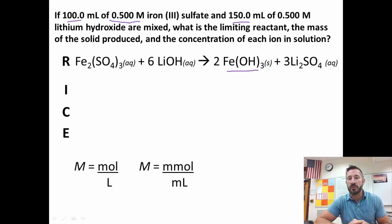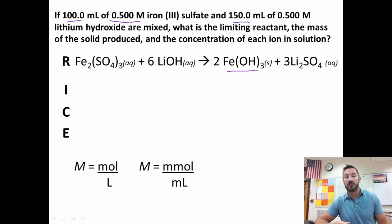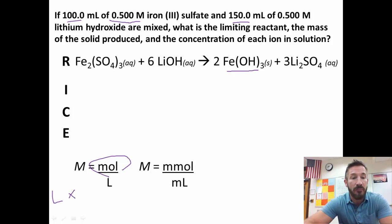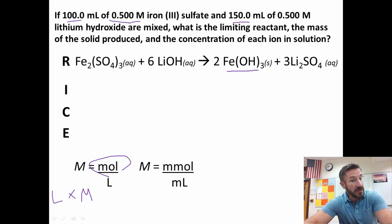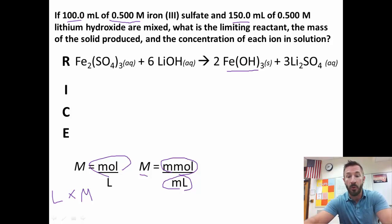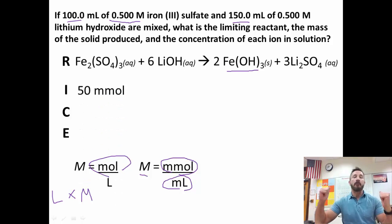So let's get started. If molarity equals moles over liters, then moles equals liters times molarity — the liters cancel and you're left with moles. We'll do the same thing with millimoles: millimoles equals milliliters times molarity. So for iron(III) sulfate, we take 100 mL times 0.5 M, and we get 50 millimoles.